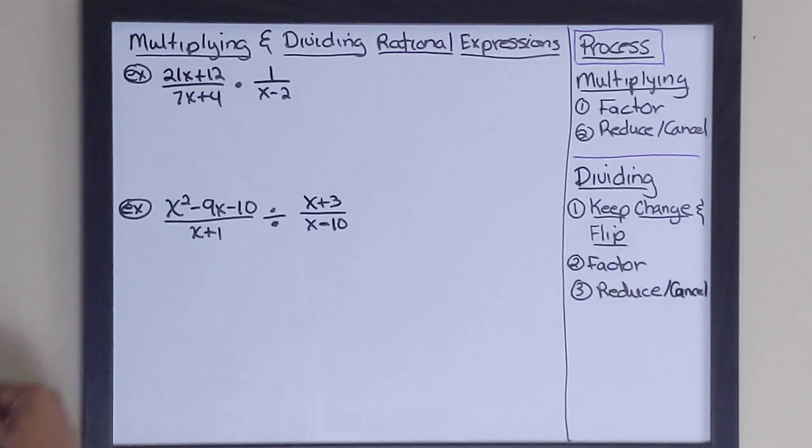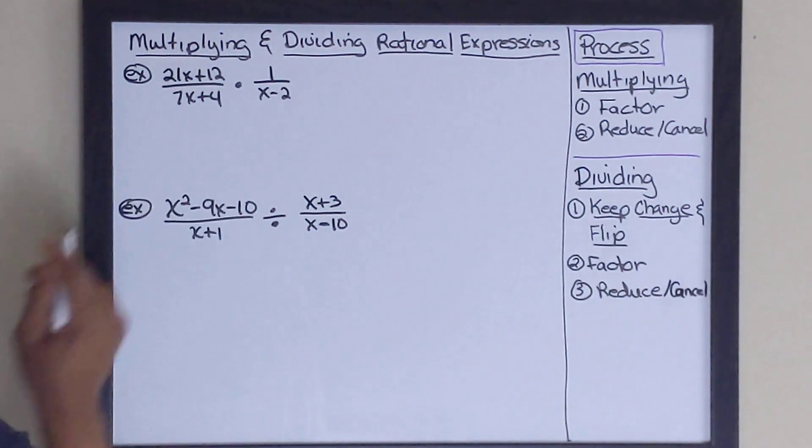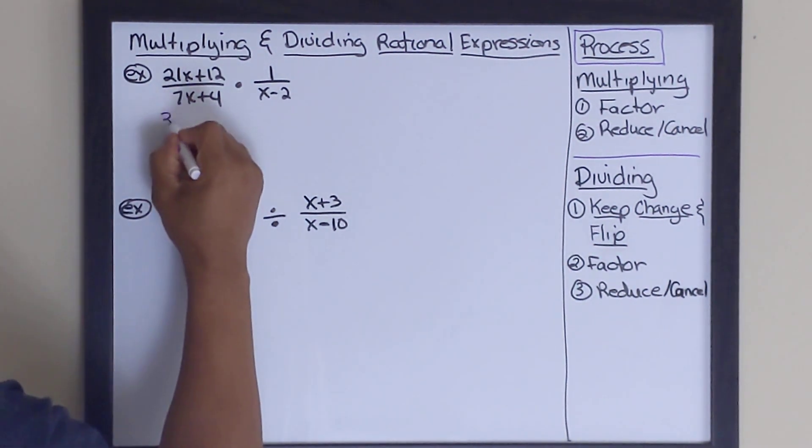So let's look at our numerator here. The numerator, 21x plus 12, is factorable. And we can break that down using greatest common factor. So let's go ahead and do that. 21x and 12 both have 3 in common. So I'm going to go ahead and write that down.